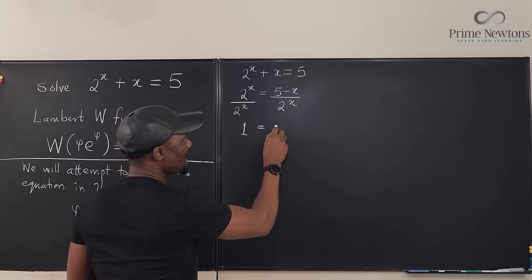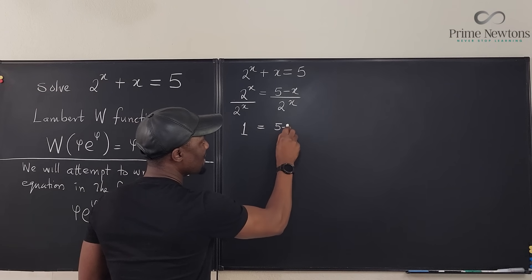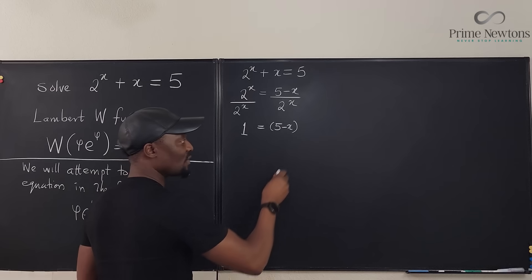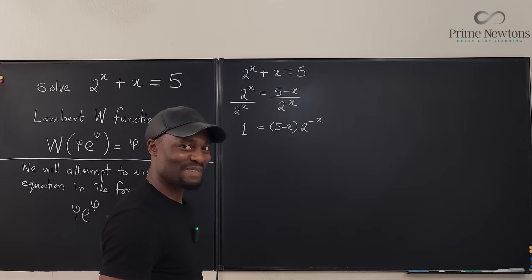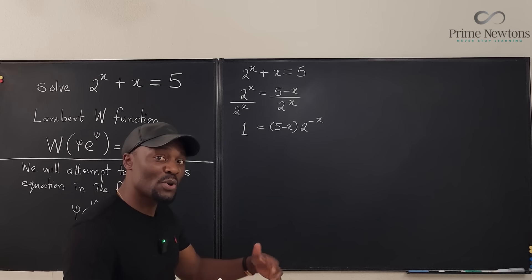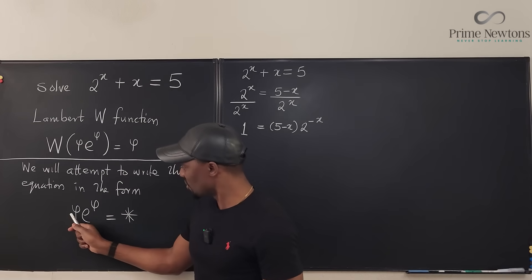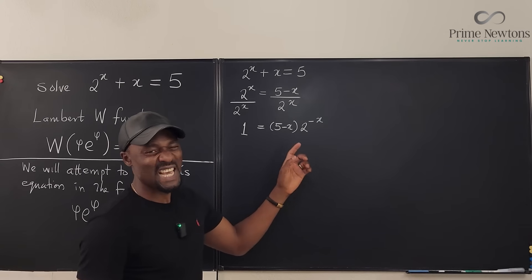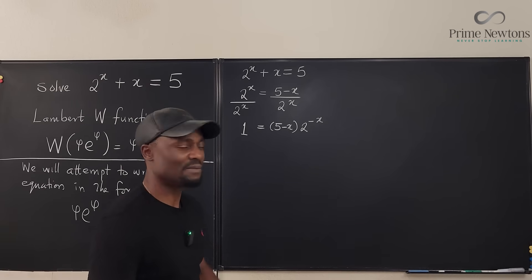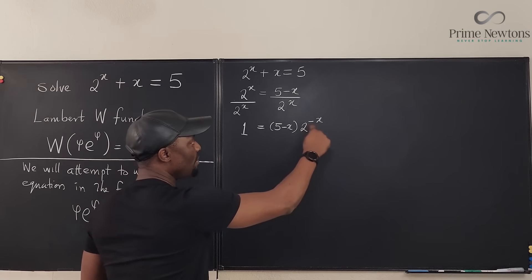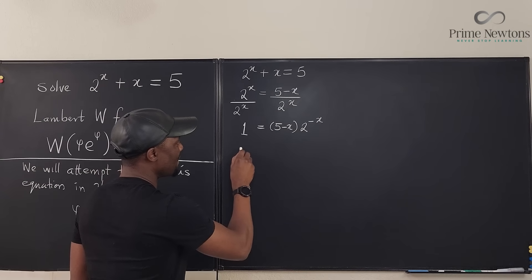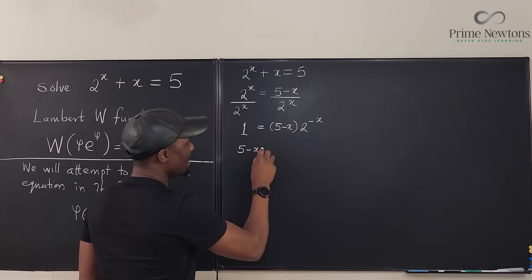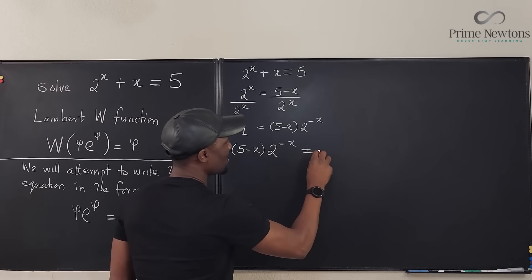And what I have here is (5 - x) divided by 2^x, which is the same thing as 2^(-x). It's beginning to look a lot like the argument you're looking for. Why? Because remember, what you're looking for needs to look like this: something times an exponential function. Although we don't have e yet, but we can write 2 in terms of e. That's easy for us to do. But we want what is up here to look exactly like this. So let me move this to this side.